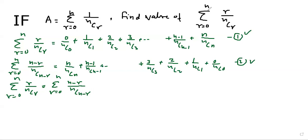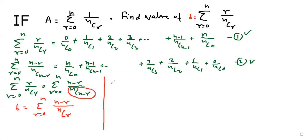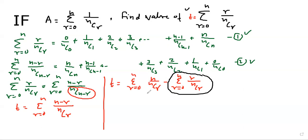Let's assume both are equal to t. So t equals summation r equals to 0 to n, (n minus r) upon nC(n minus r). Using binomial properties, nC(n minus r) equals nCr, so t equals summation r equals to 0 to n, n upon nCr, minus summation r equals to 0 to n, r upon nCr. This gives t equals n times summation of 1 upon nCr, minus t. Therefore, 2t equals n times summation r equals to 0 to n, 1 upon nCr.